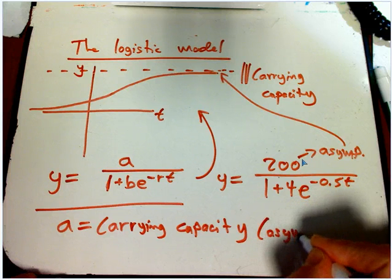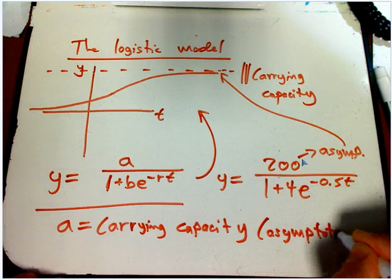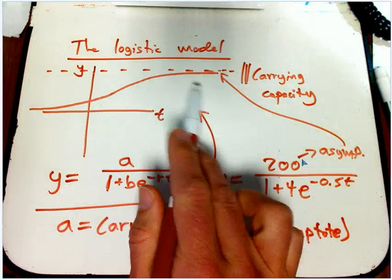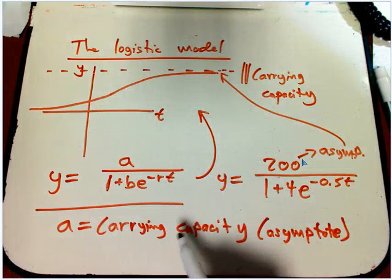So, that's that upper horizontal asymptote. It'll never get bigger than A, but it will get close to it, arbitrarily close to it, eventually.